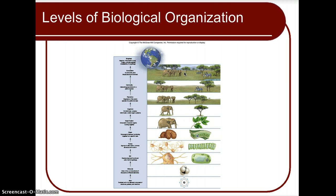When communities plus the physical environment come together they form the biosphere — the sphere of life. The biosphere extends into our atmosphere (the sphere of gas) and down into the depths of the ocean, part of the hydrosphere (the sphere of water). We also have the geosphere, the sphere of land. Where the atmosphere, hydrosphere, and geosphere all meet, that is the biosphere — the sphere of life that we focus on in biology.